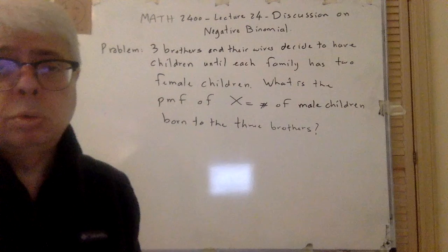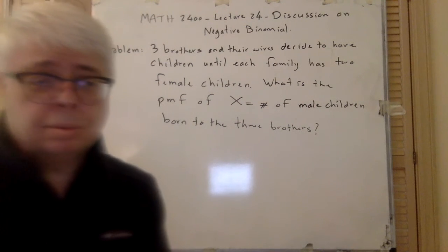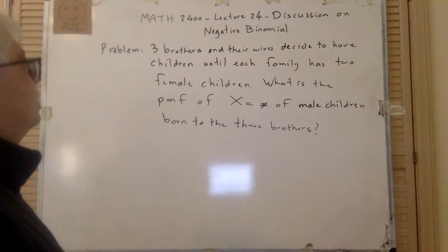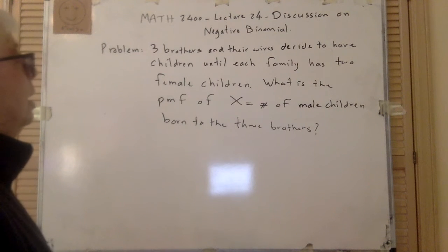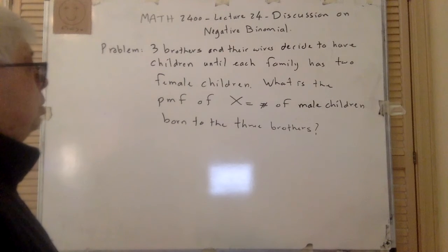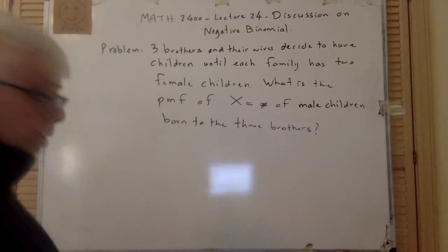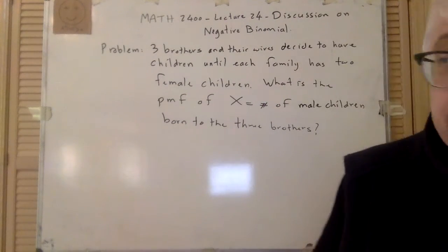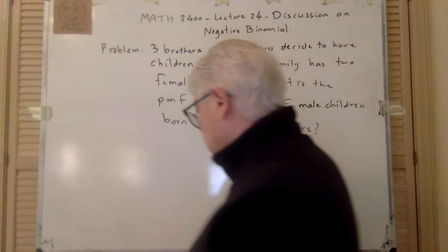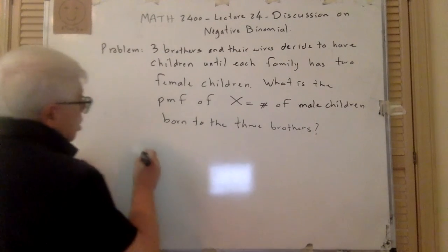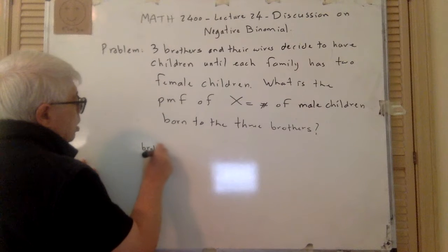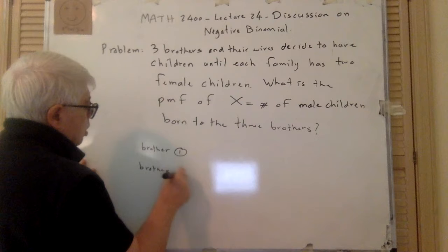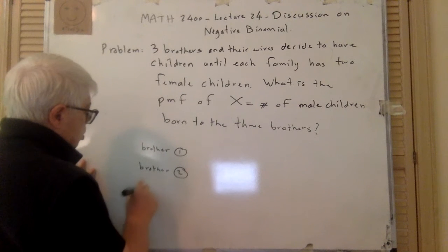Okay, they could have given something more interesting as an example, I don't know, but anyway. So that is, as you can guess, it says on top that it is negative binomial. But what negative binomial? So it's like brother one, then brother two, and brother three.